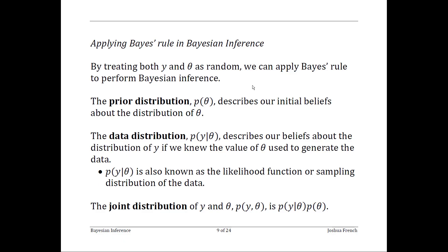You may be wondering exactly how we apply Bayes' rule in performing Bayesian inference. The key ingredient is to treat both the observed data y and the parameter vector theta as being random — we have to give them distributions. The distribution of theta that we consider is the prior distribution, which describes our initial beliefs about the distribution of our parameter vector. This can be a very vague distribution if we don't know much about theta ahead of time, or more compact and specific if we have expert opinion to guide our beliefs.